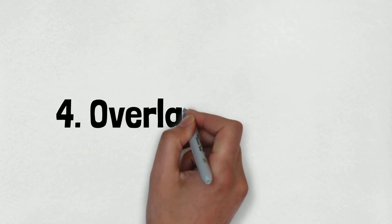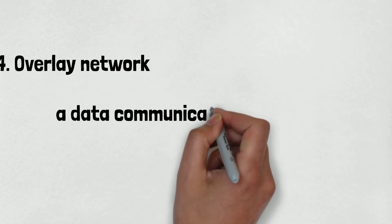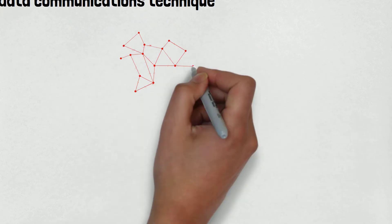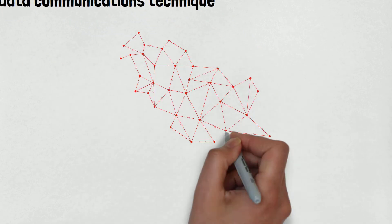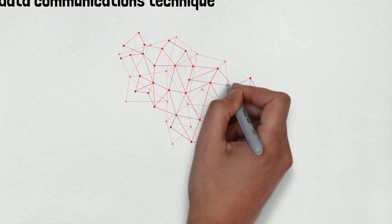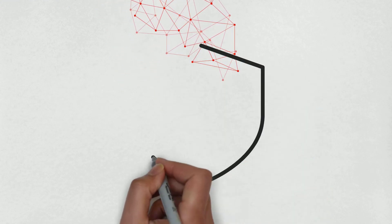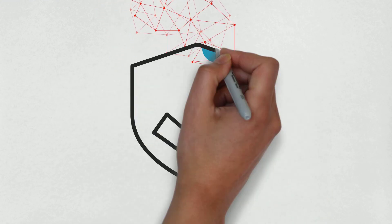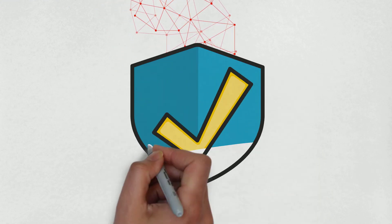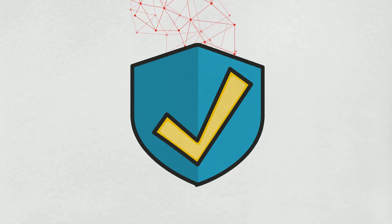Number 4 is the Overlay Network. It is a data communications technique in which software is used to create virtual networks on top of another network, typically a hardware and cabling infrastructure. This is often done to support applications or security capabilities not available on the underlying network.